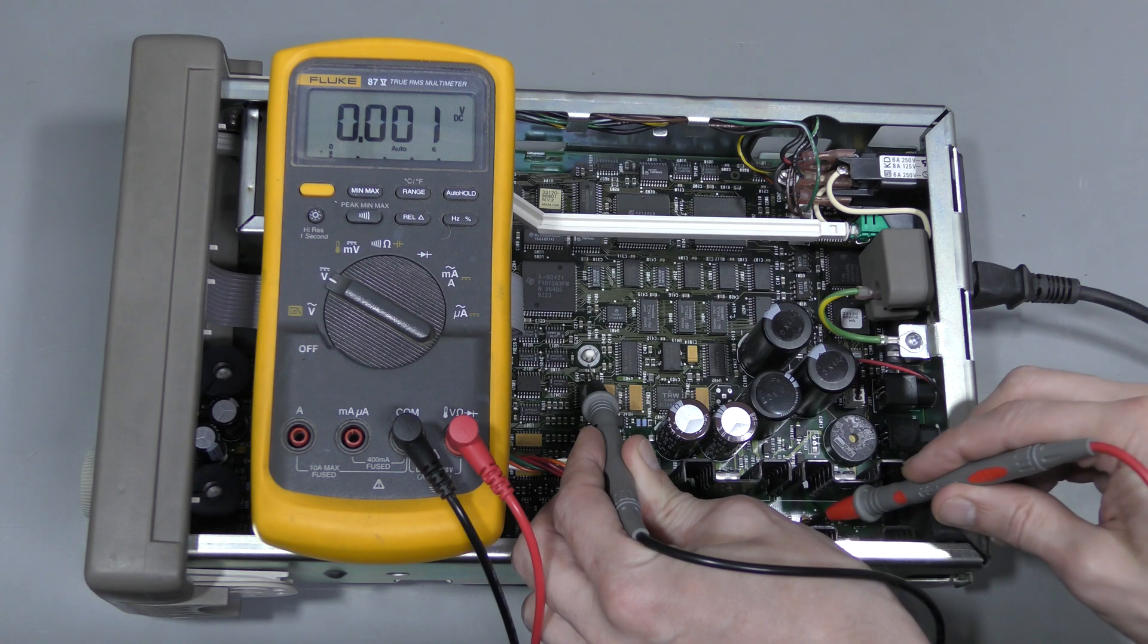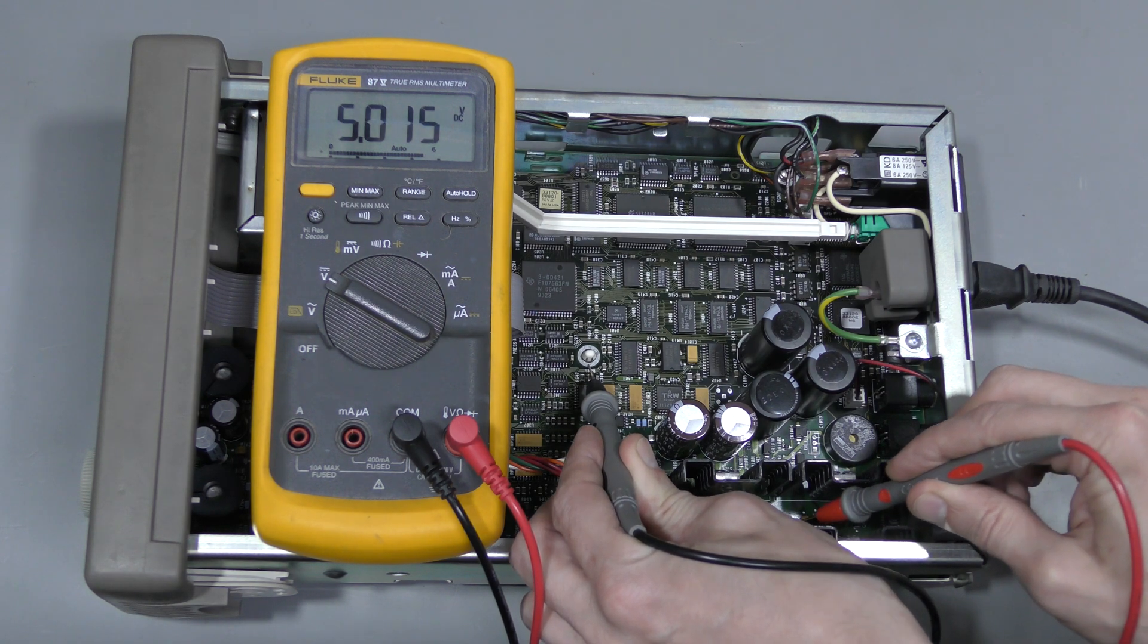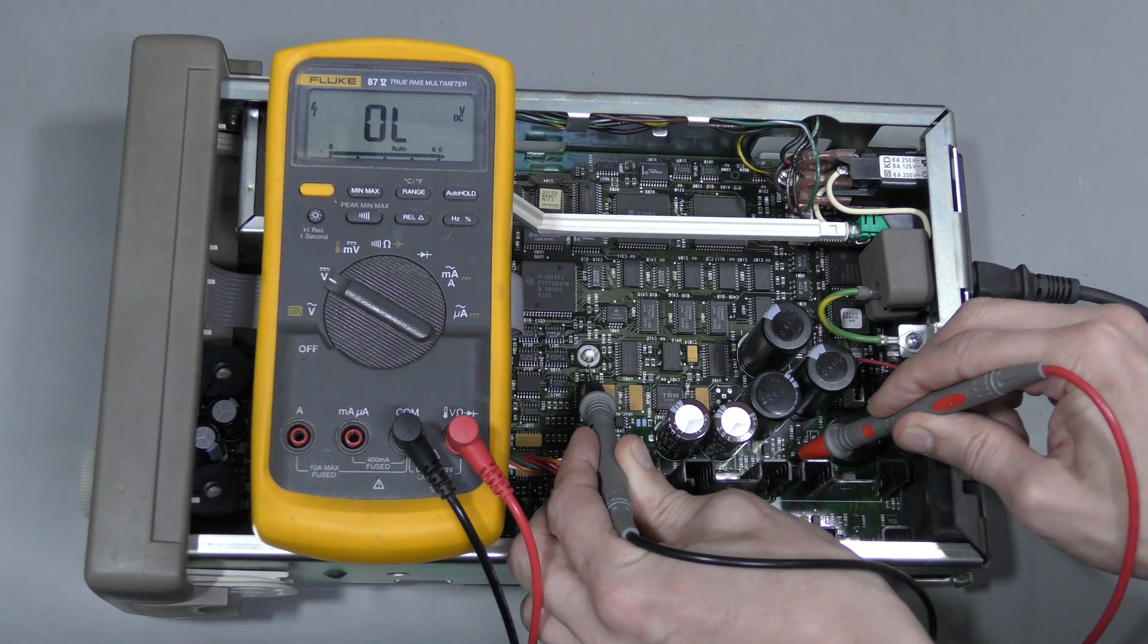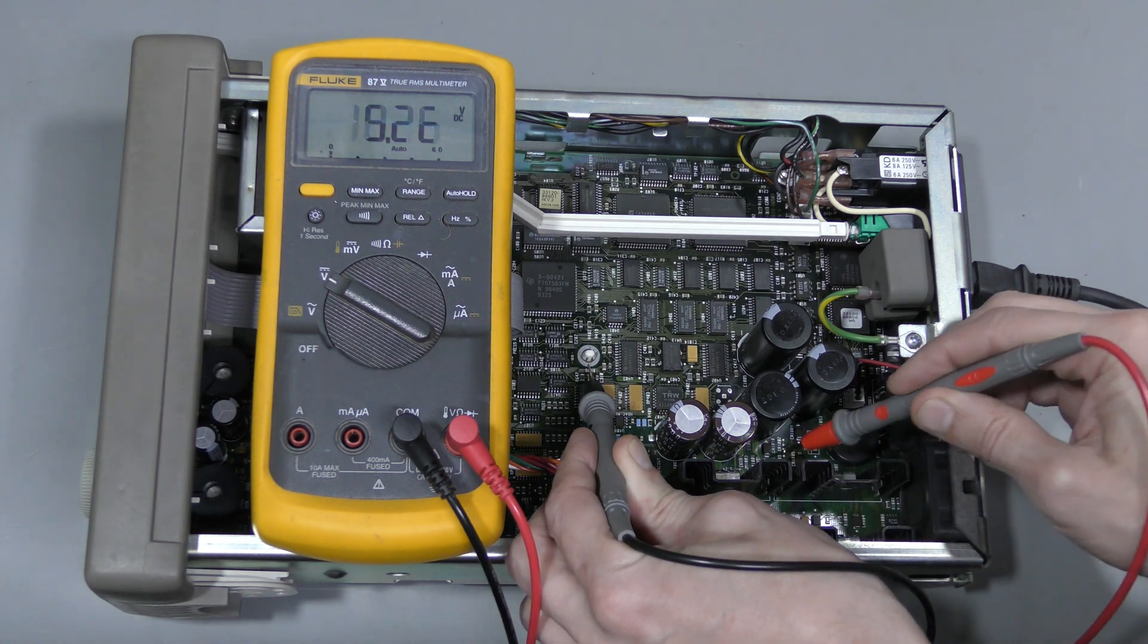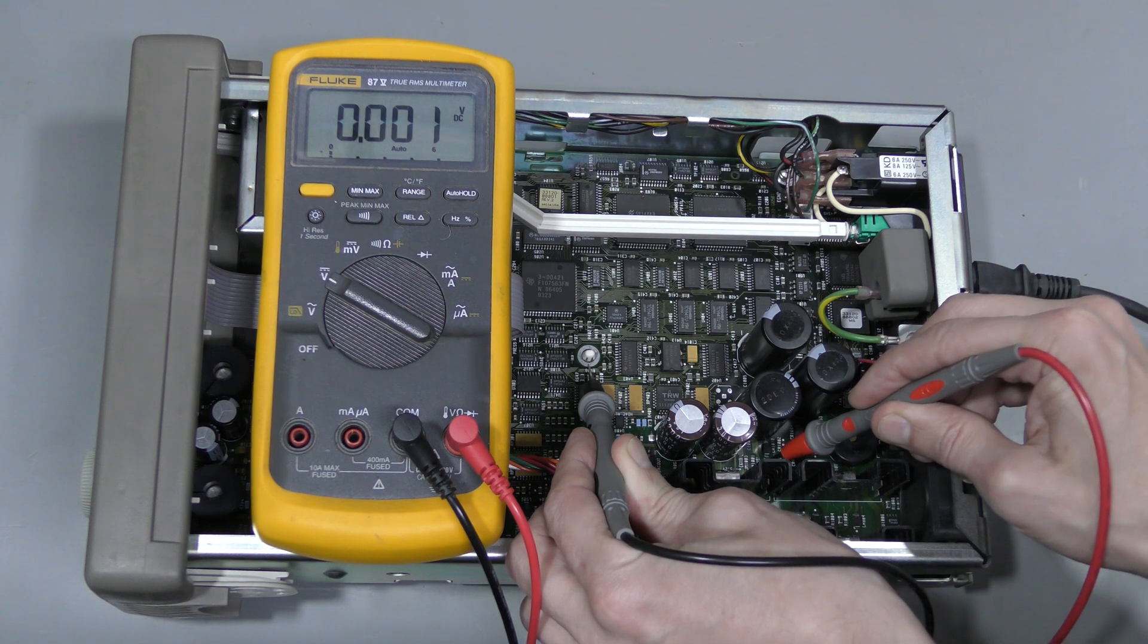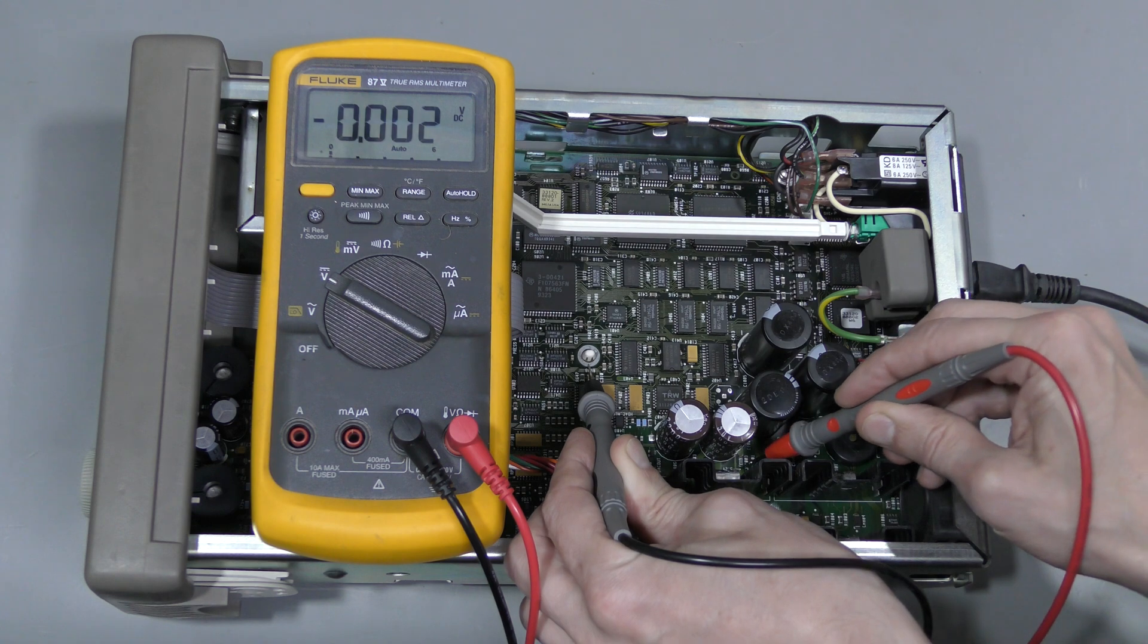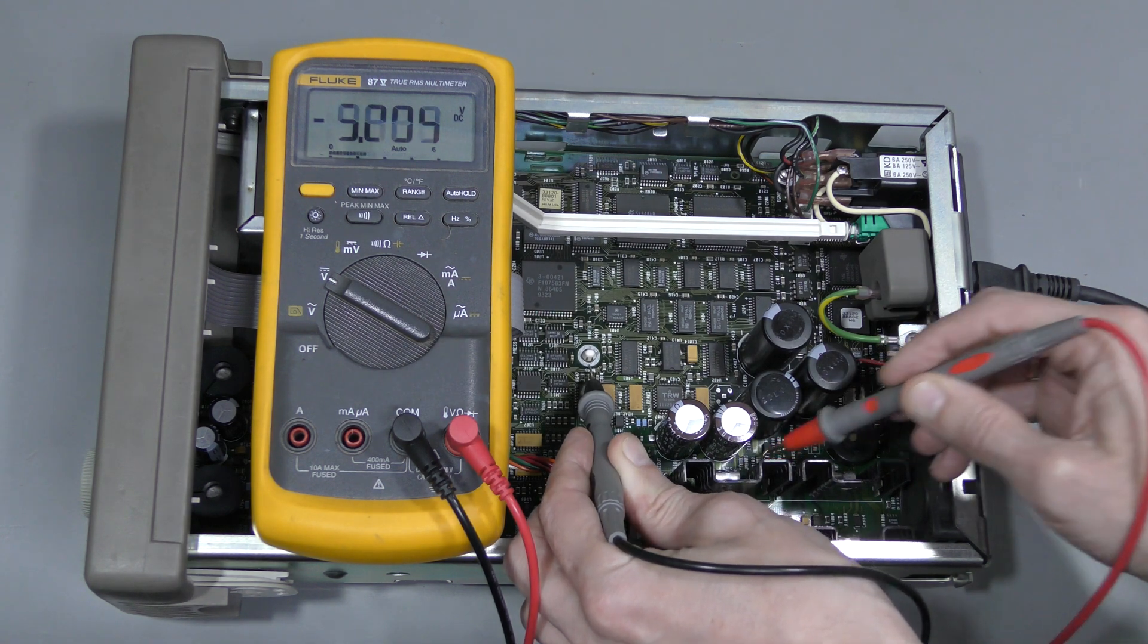So let's use this ground. This should be positive 5V rail. It's there. This should be positive 18. No problem. Negative 18, present. And negative 5.2, no problem.